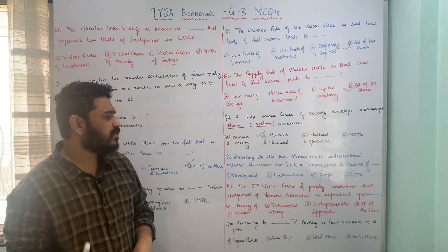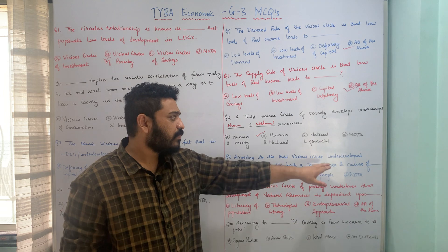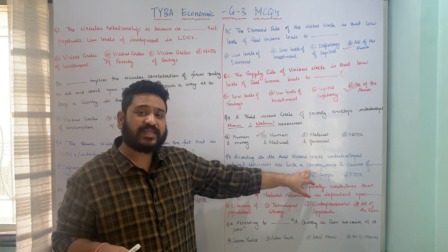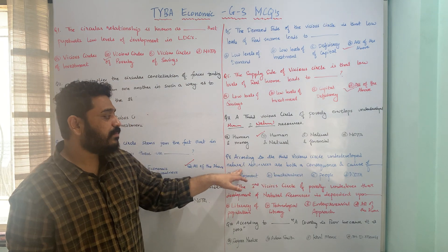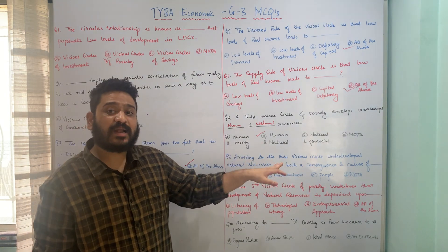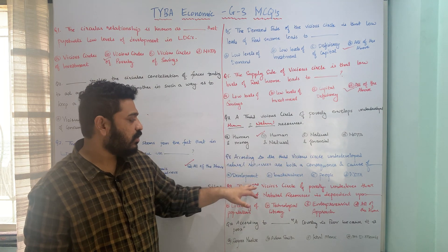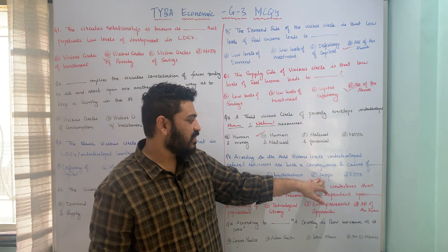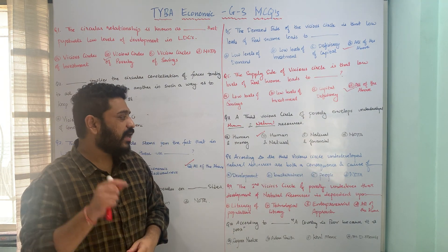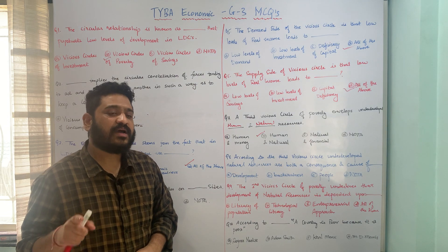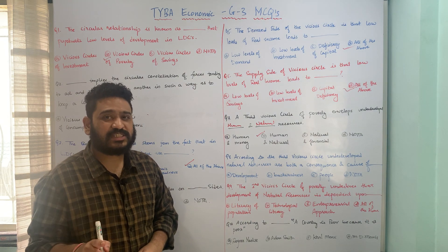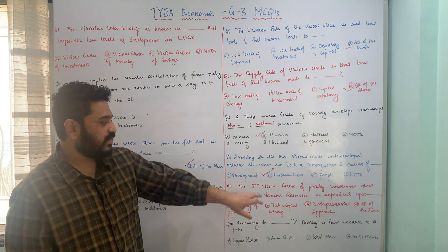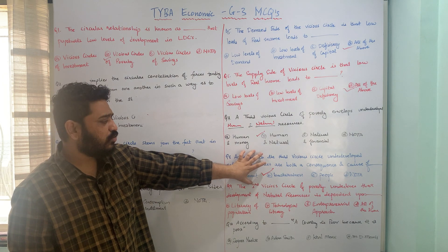The next question relates to the third vicious circle: underdeveloped natural resources are both a consequence and cause of what? Options: A — development; B — backwardness; C — people; D — none of the above. According to the third vicious circle, underdeveloped natural resources are both a consequence as well as a cause of backwardness. Therefore, option B is the correct answer.